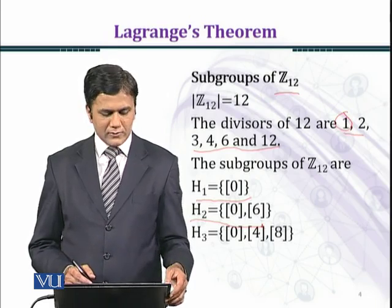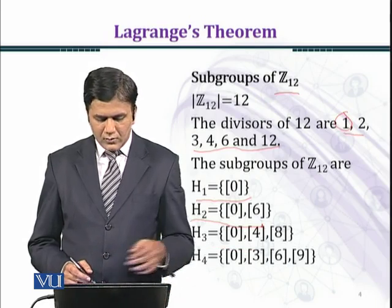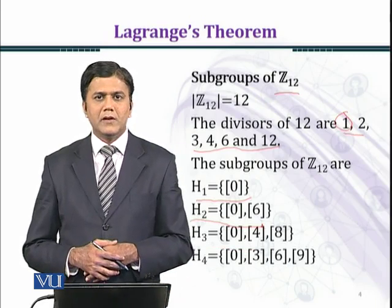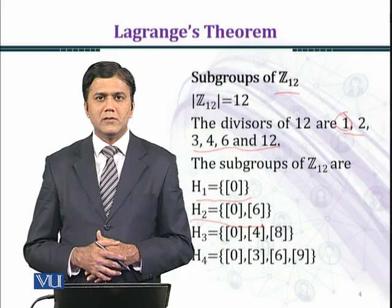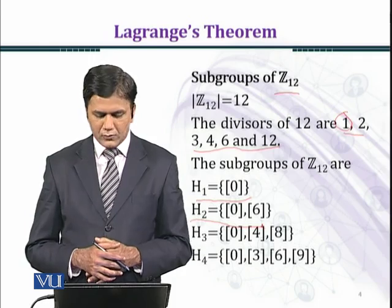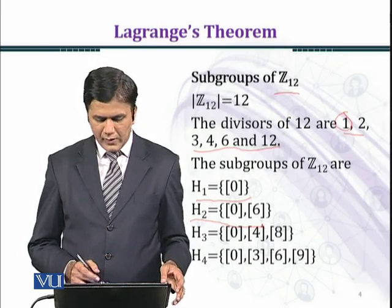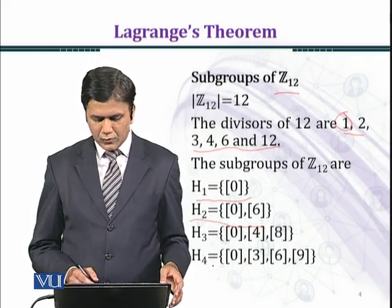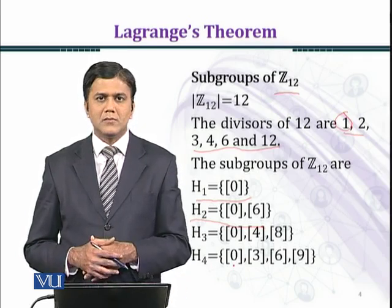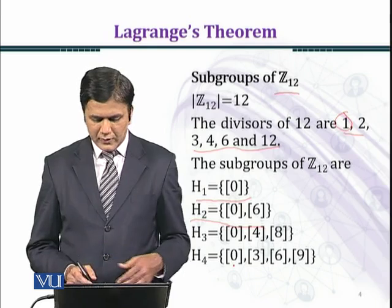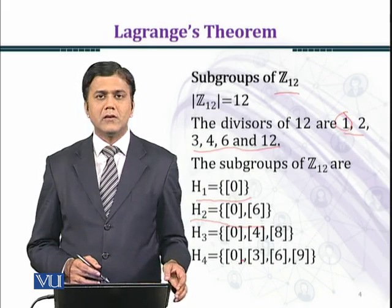In a similar manner, we can find the subgroup of Z₁₂ of order 4. So H₃ gives us this subgroup. It contains 0, 3, 6, and 9.